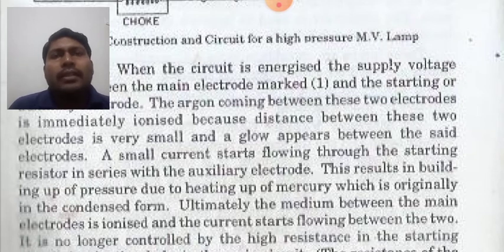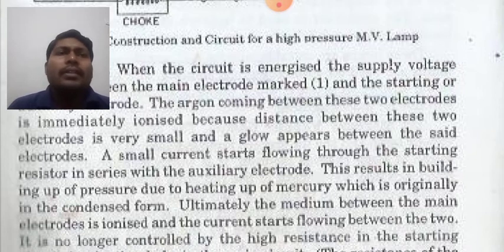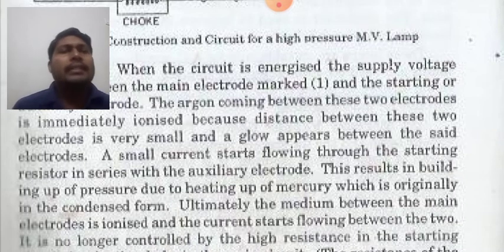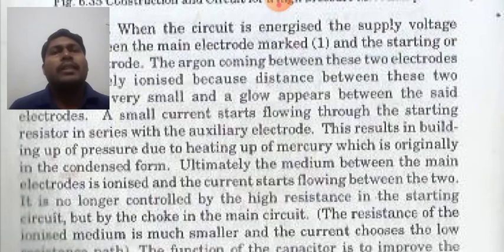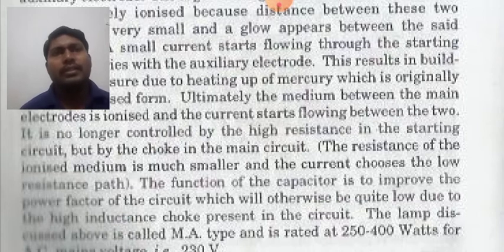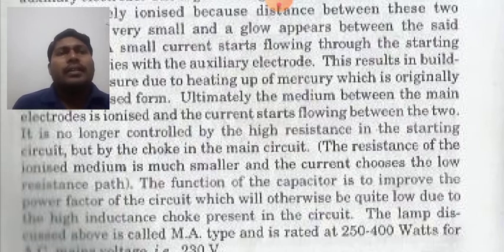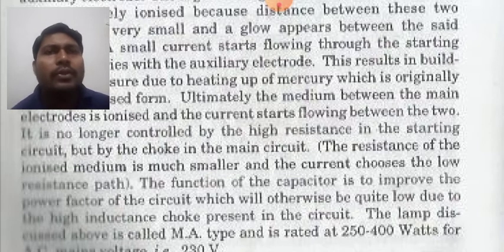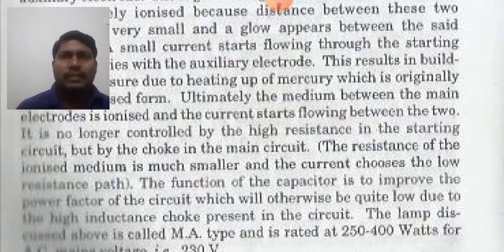Ultimately the medium between the main electrodes is ionized and current starts flowing between the two. It is no longer controlled by the high resistance of the starting circuit, but by the choke in the main circuit. The resistance of the ionized medium is much smaller and the current chooses the low resistance path.